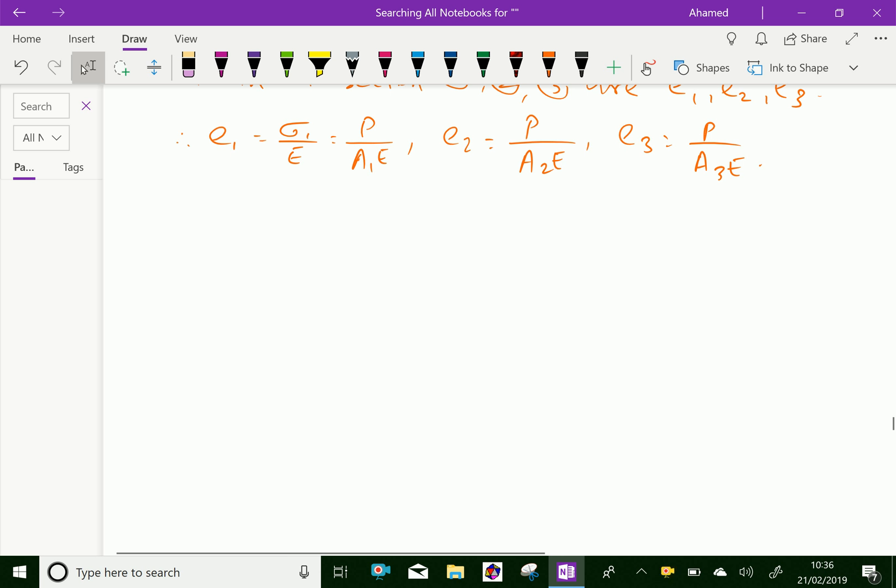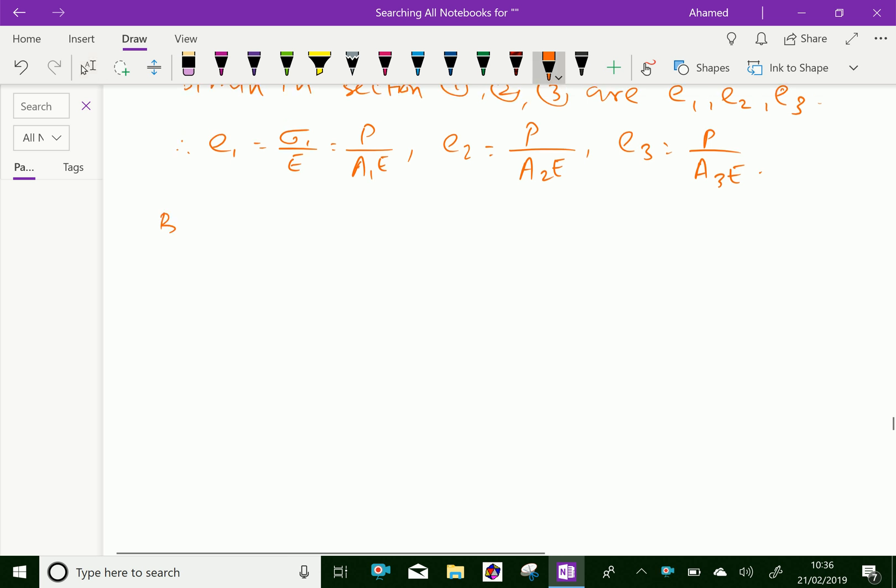But we know that strain in section 1, which we call E1, equals change in length delta L1 over L1. E2 we can write as delta L2 over L2, and E3 equals delta L3 over L3.